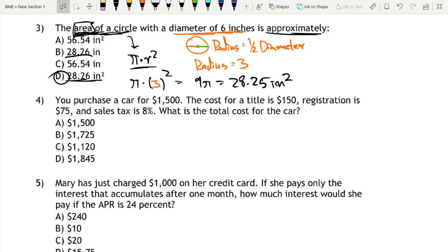So now for question four, we have you purchase a car for $1,500. The cost for title is $150. Registration is $75. And sales tax is 8%. What is the total cost for the car?